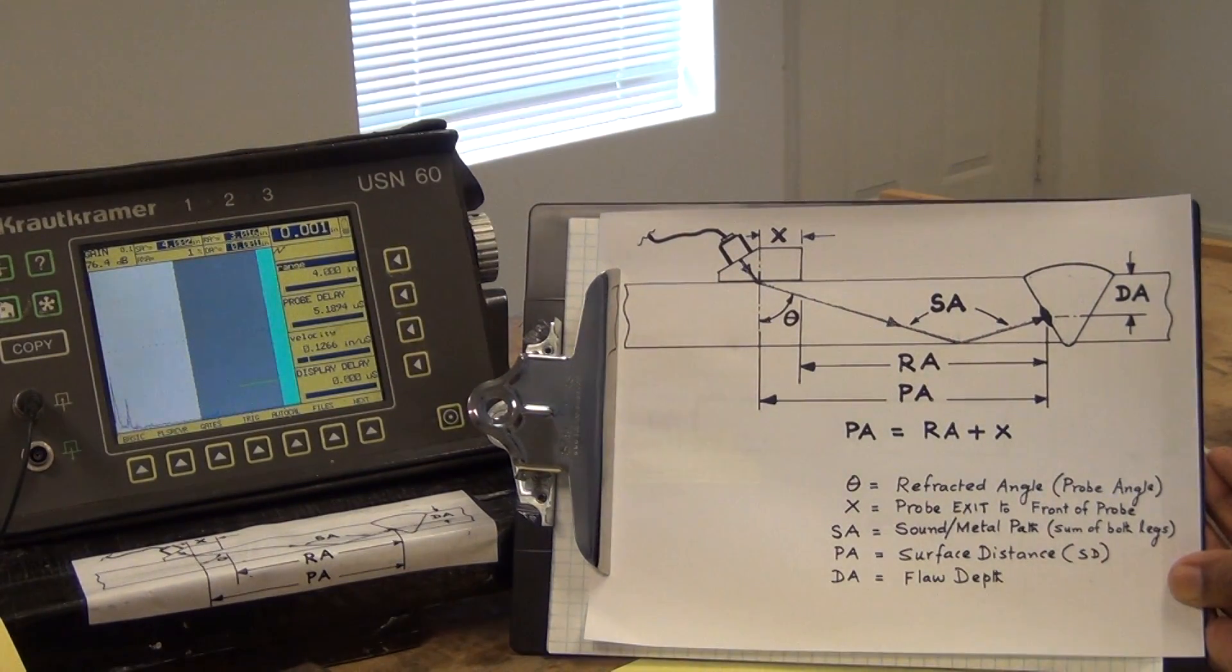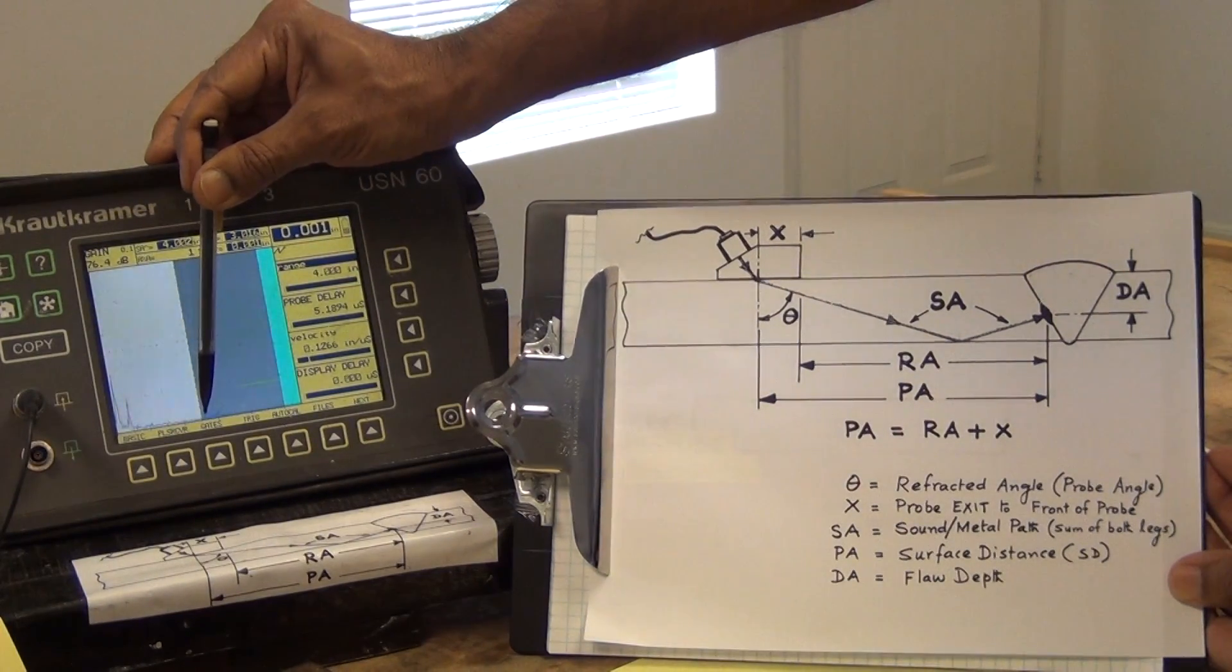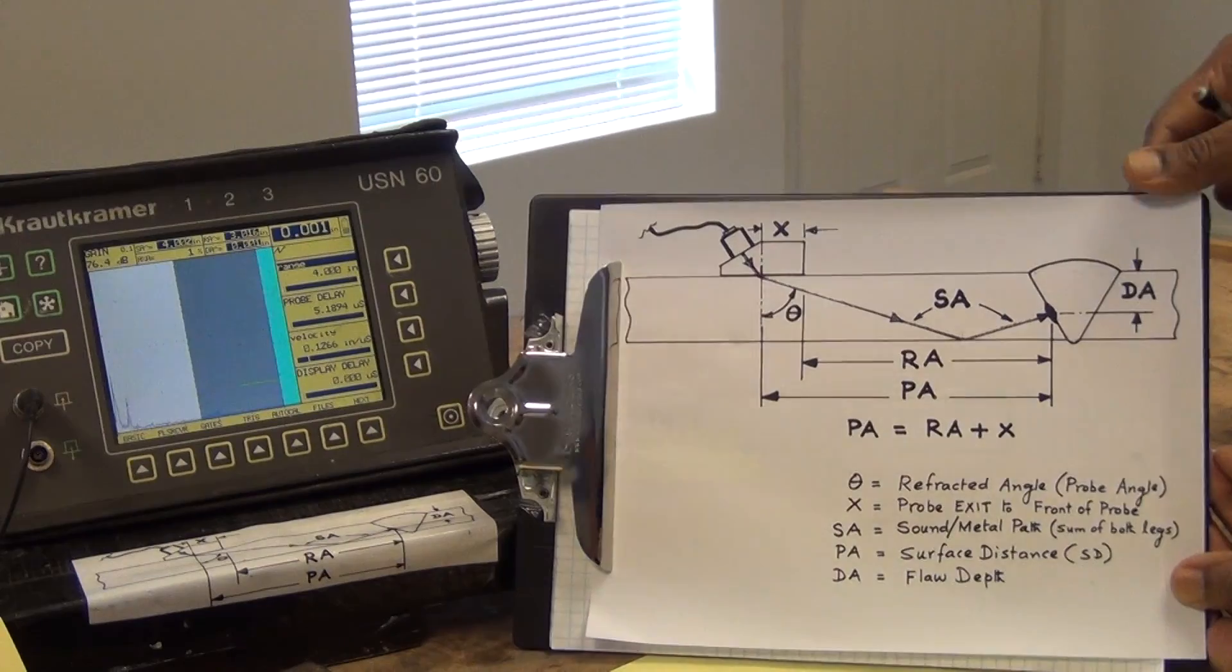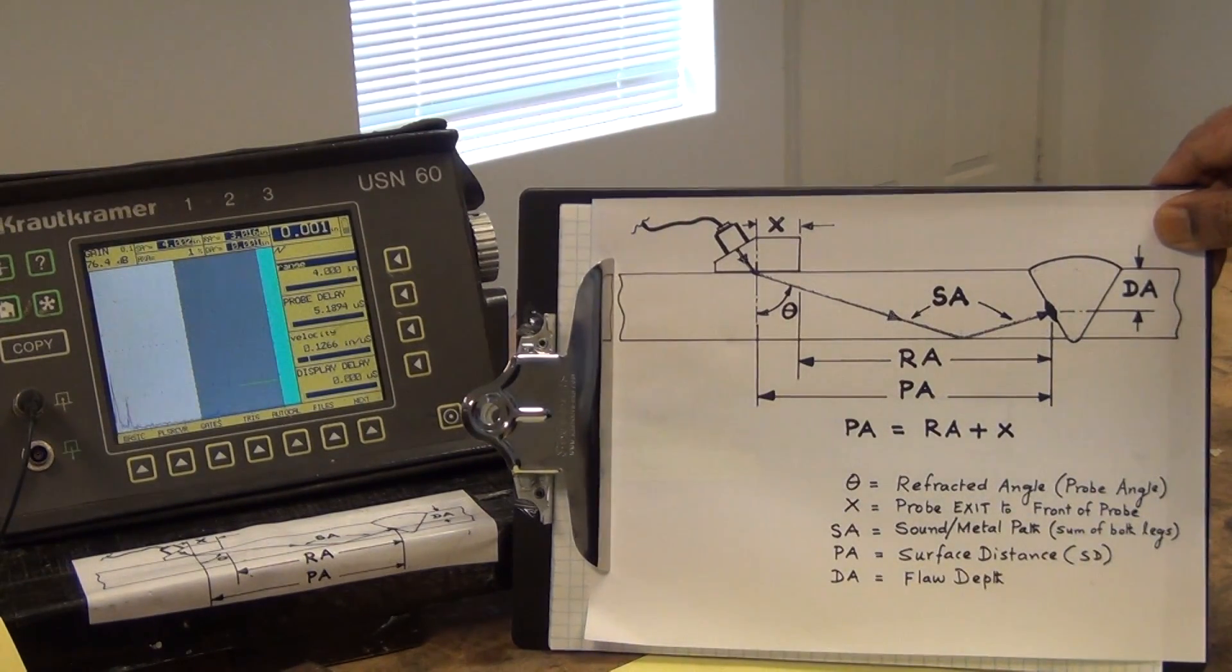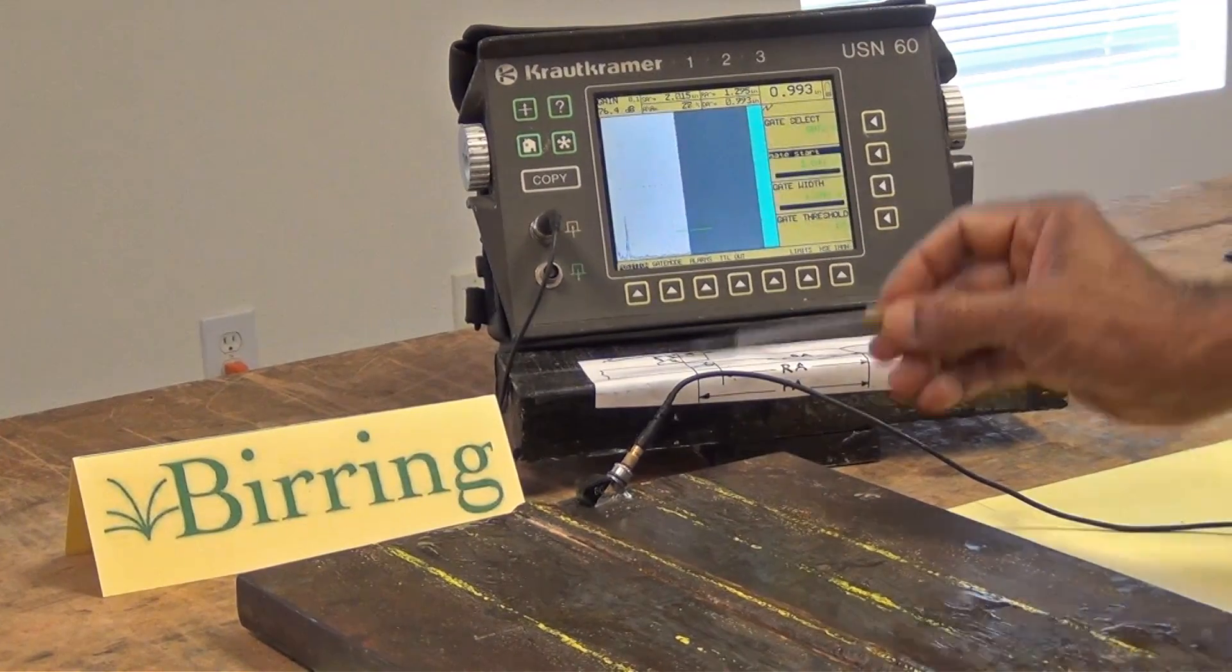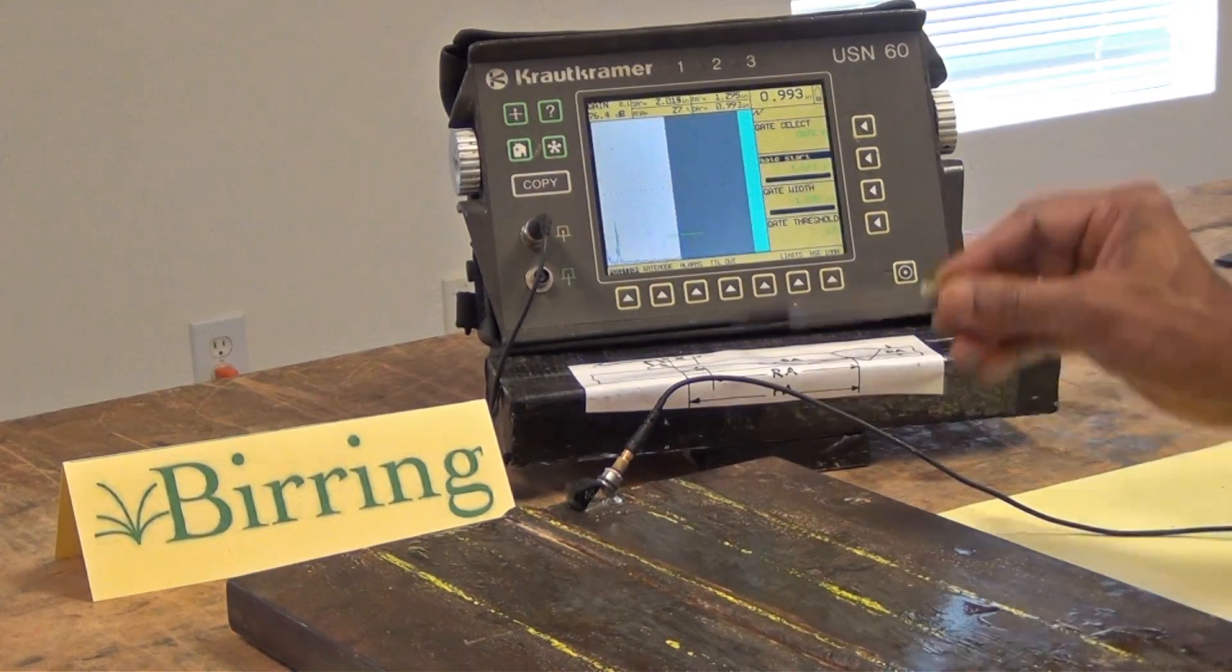So if there is an indication at the bottom of the plate, it would show up right at this point. Now let us start scanning the plate and see where the indications appear. So I put the probe here and we see a signal. That signal is shown here.